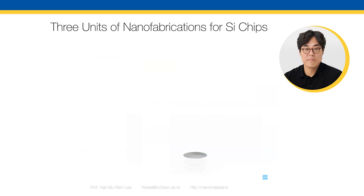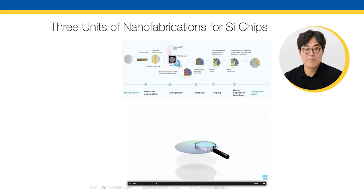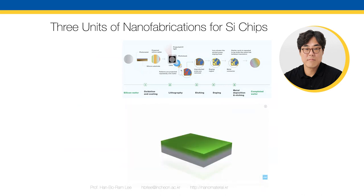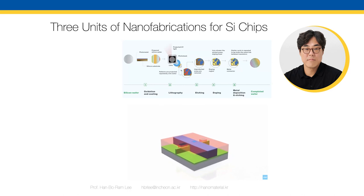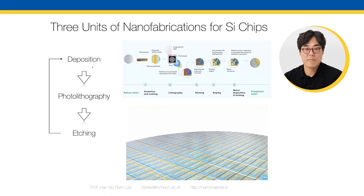Now a simple introduction to nanofabrication. Nanofabrication is composed of photoresist (PR) coating, photolithography, deposition, and etching. Deposition means adding material, photolithography transfers a pattern onto the thin film, and etching removes unwanted areas. We repeat this process — deposition, patterning, etching — again and again to fabricate tiny transistors and silicon devices. This is very challenging. Let's start from an old story: the famous physicist Professor Richard Feynman at Caltech gave his famous talk 'There's Plenty of Room at the Bottom,' meaning there are great opportunities if we decrease material size to the nanoscale.